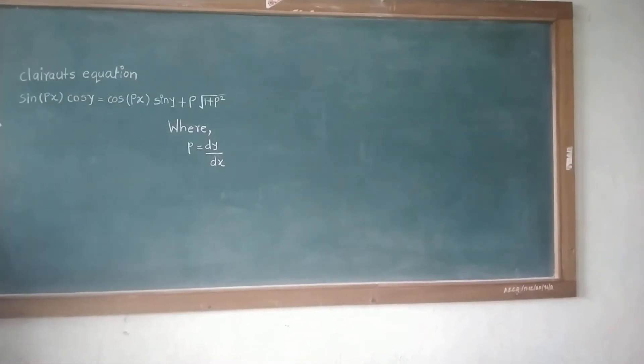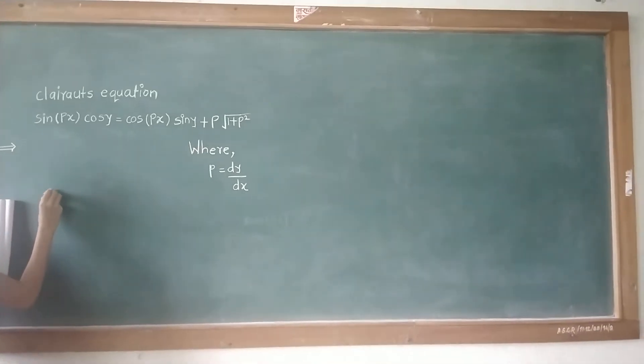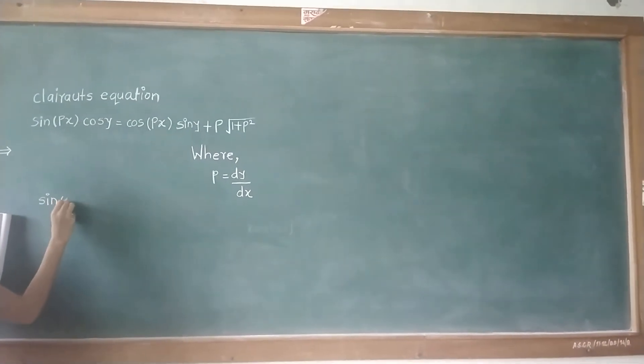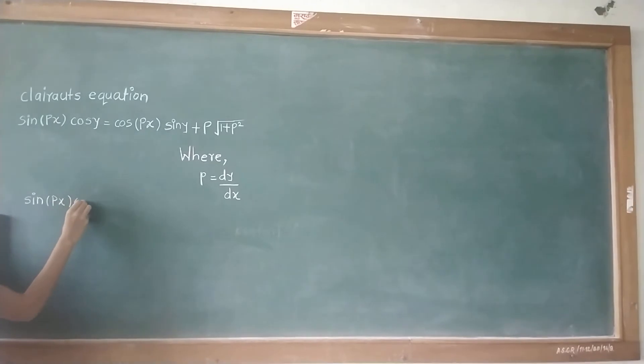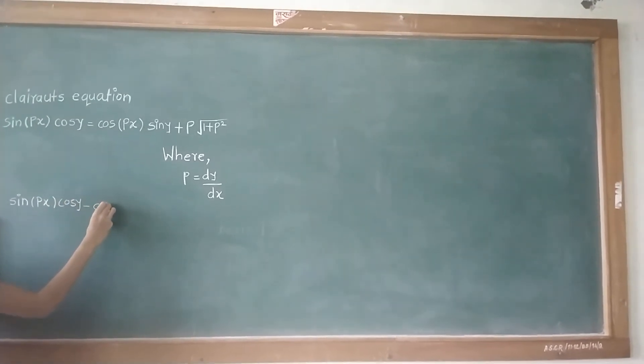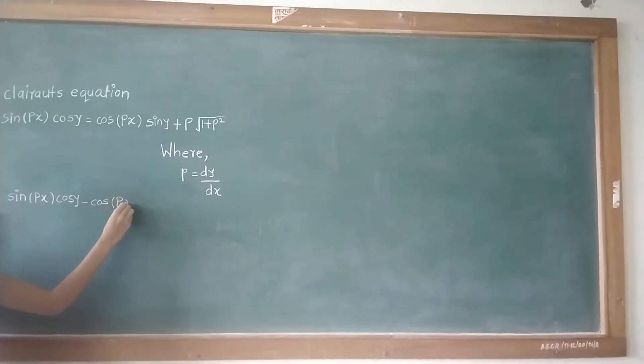We are solving an example of Clairaut's equation from the chapter on differential equations of first order and higher degree. Our example of Clairaut's equation is sin(px)cos(y) = cos(px)sin(y) + p√(1+p²), where p is dy/dx.